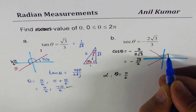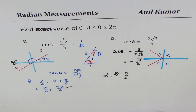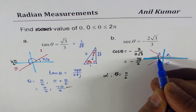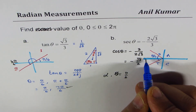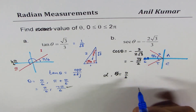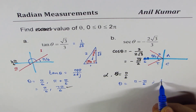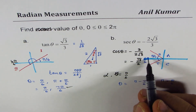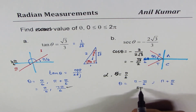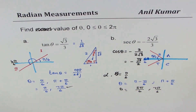Since cosine is negative, we are looking at quadrants 2 and 3. The related acute angle is π/6. So θ = π minus π/6 and π plus π/6. Writing π as 6π/6, one less gives 5π/6 and one more gives 7π/6. The two possible values for θ when secant is minus 2√3/3 are 5π/6 and 7π/6.